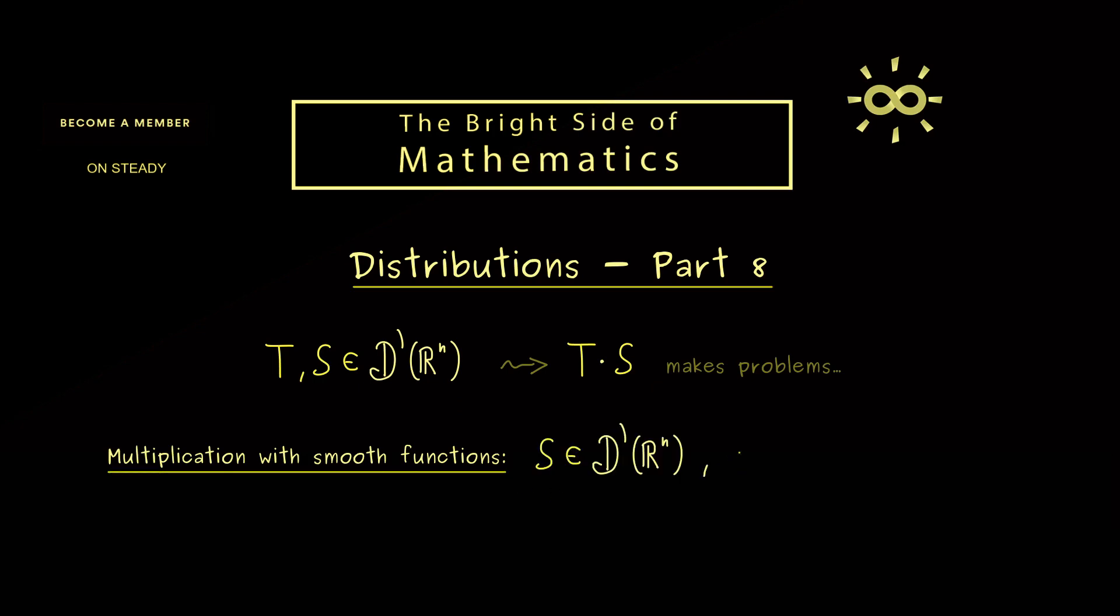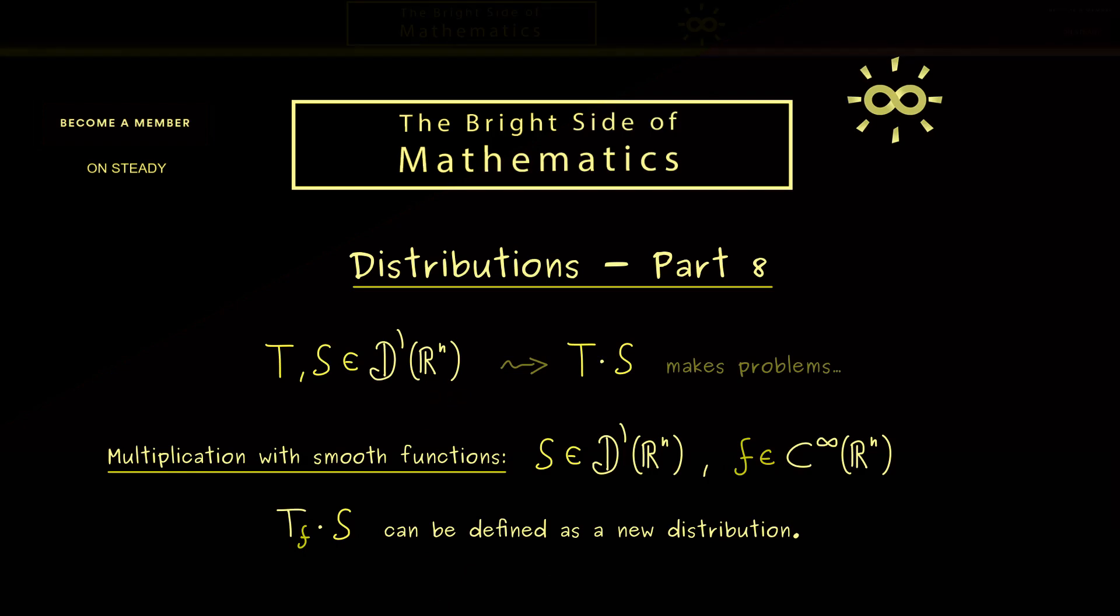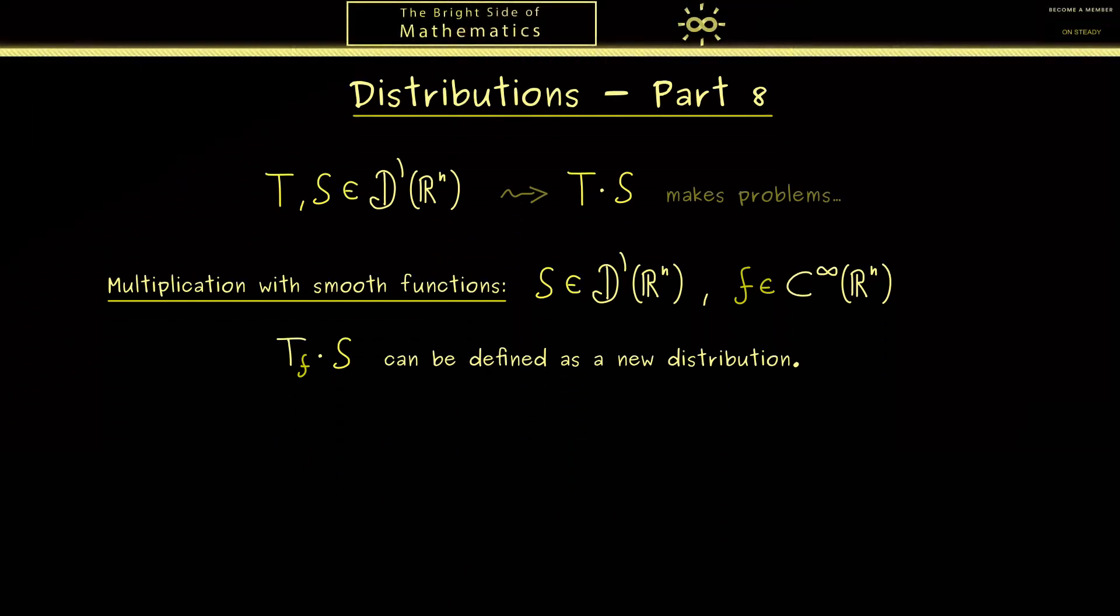Hence we take a distribution S and the function f from C infinity. In other words, the function f should be arbitrarily often differentiable. And in this case we can say what T_f times S should be. Of course what should come out is again a distribution. So the question is what is a meaningful definition for this.